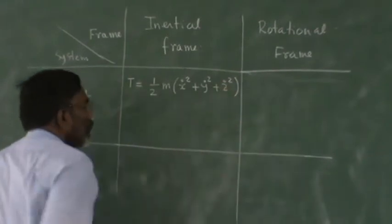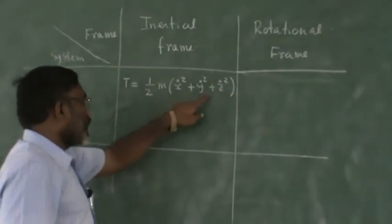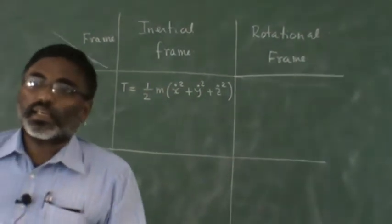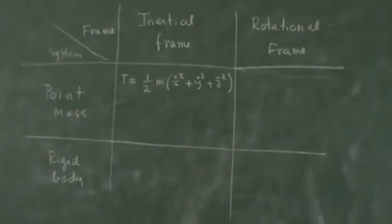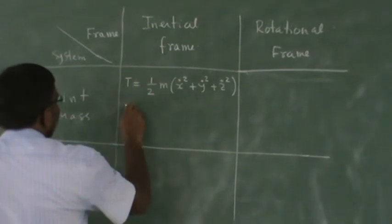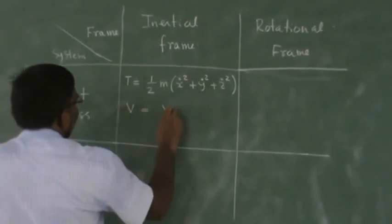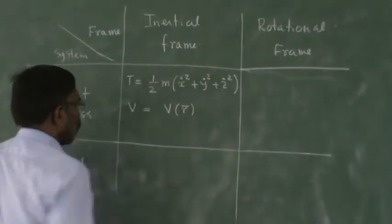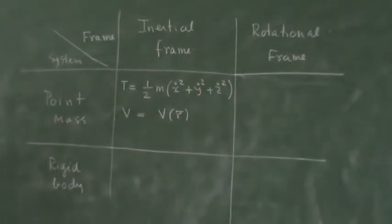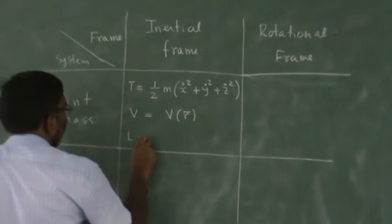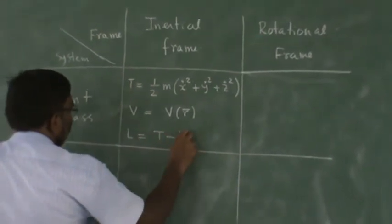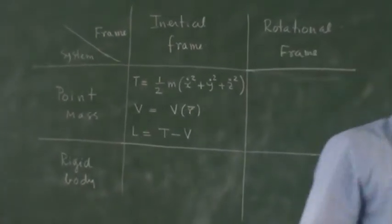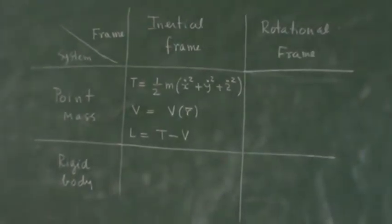If you have some generalized coordinates, then use x, y, z in terms of the generalized coordinates and then substitute them here. You will get the kinetic energy in terms of the generalized coordinates. And potential energy V is equal to V(r), r is x. And you write L as T minus V. This is very simple because most of the point mass systems we have studied and we have done these various problems.